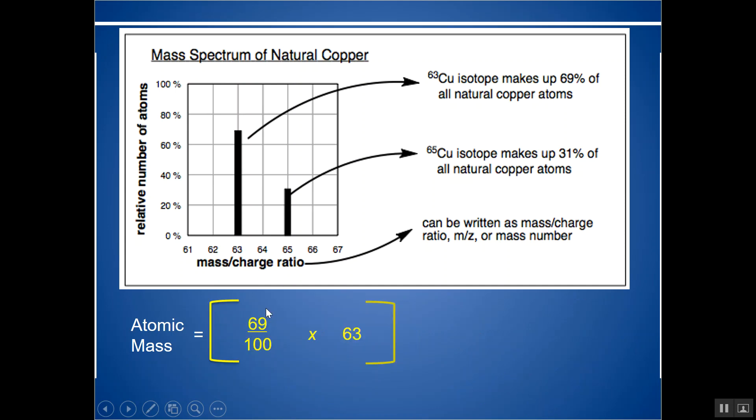So the atomic mass should be closer to 63 since it's a weighted average. 69 over 100, so we say this is percent abundance over 100 times the mass, or 0.69 times 63. I'm doing 0.31 times 65 and adding those two together and I get about 63.6, which is closer to 63 than 65 since more particles is found as Cu63. This should match or be close to the periodic table's atomic mass.